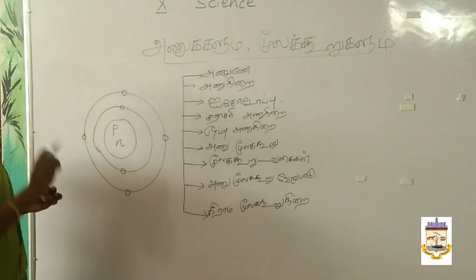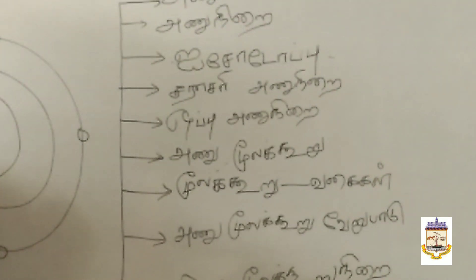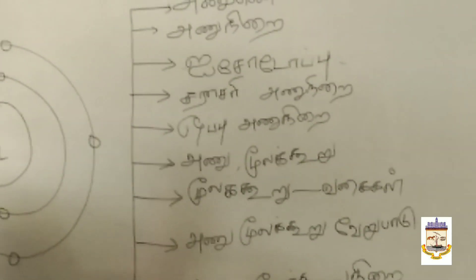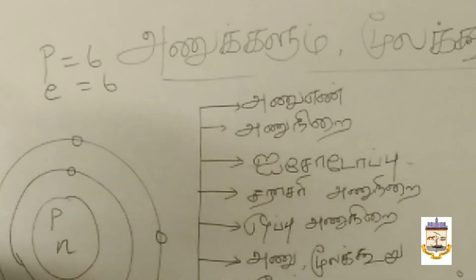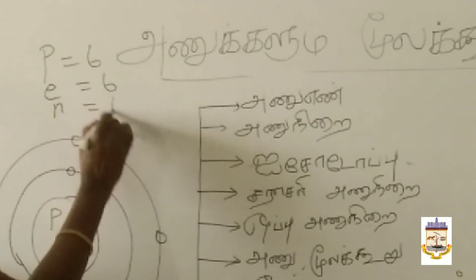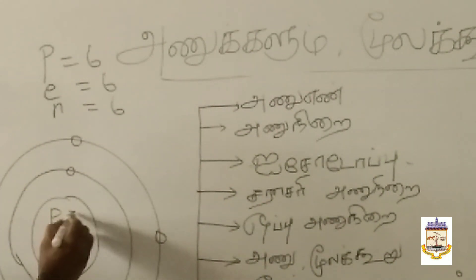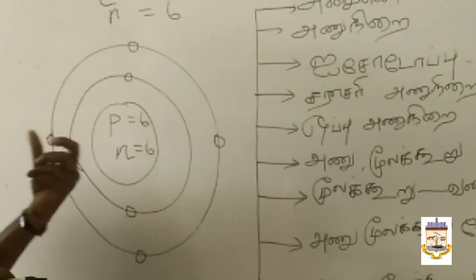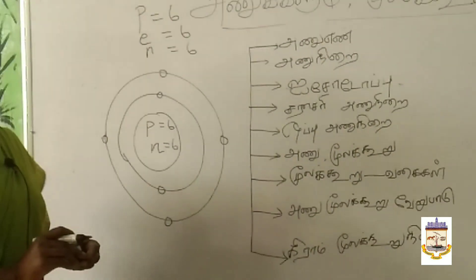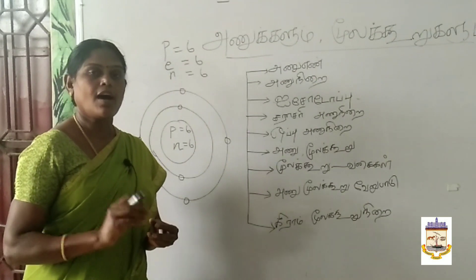How many protons are there? Six protons. The proton is a name. The electron is a name. How many electrons are there? There are six neutrons. So carbon is a name. The carbon has protons. The electron is a new electron. This is carbon.